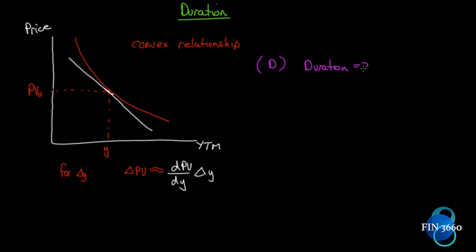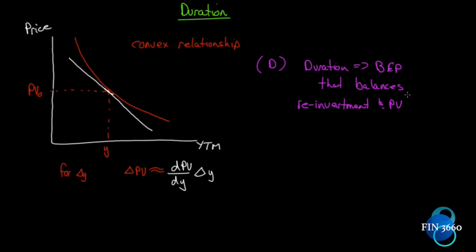Duration is really a break-even point. On a zero coupon bond, duration equals the term of the bond. But on a coupon-paying bond, it's the break-even point that balances the two forms of cash flow: reinvestment of the coupon and present value. If the yield to maturity increases, the price decreases, but every coupon payment can now be reinvested at higher rates. Duration is the break-even point that balances the increase in reinvestment return with the drop in price.